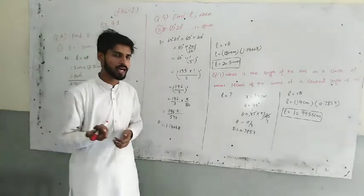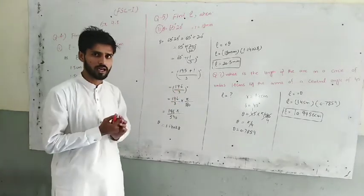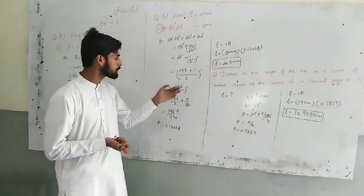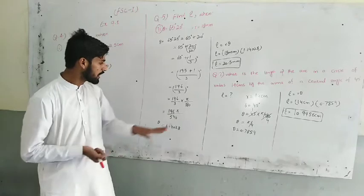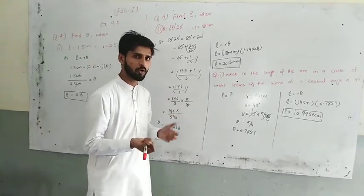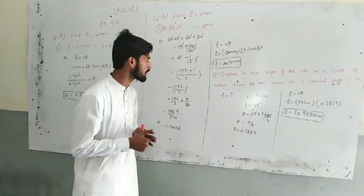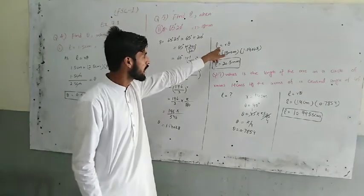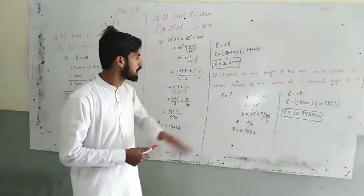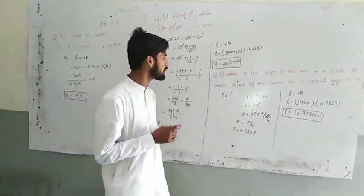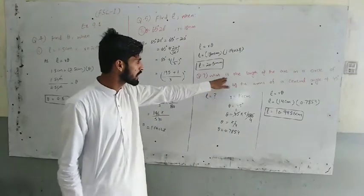Then we convert minutes to degrees by dividing by 60. After simplification and multiplication, we get theta approximately 1.14028 radians. Now, to find the arc length, we use this value.